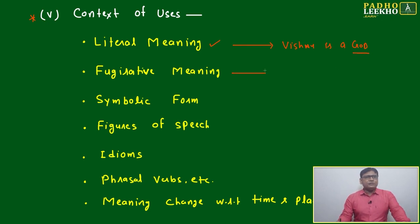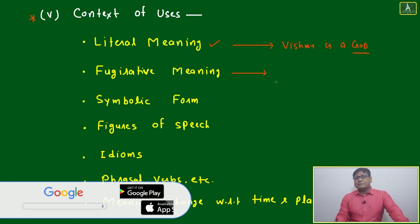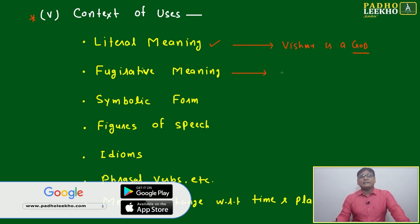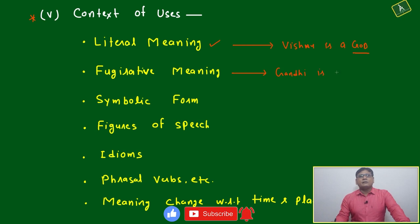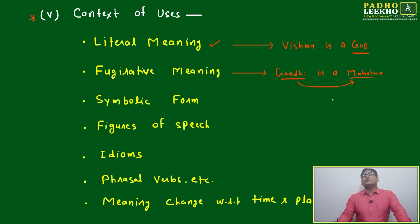Next is your figurative meaning, means indirect way. Like if I am telling Gandhi is a Mahatma. Gandhi actually was not Mahatma, but we are just using in figurative way, indirect way. Or Gandhi is a god, like means we are using indirect way about Gandhi.